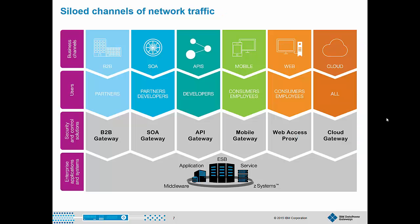The problem that companies of all sizes are facing is that as we update our enterprise architecture to accommodate these new systems of engagement, we have to adapt our network infrastructure to support the new channels. For example, you may already have a SOA gateway that protects web services, but to support APIs you'll need a specialized API gateway. And maybe you need to support mobile devices, so add a specialized mobile gateway. For B2B traffic, you need a specialized gateway that manages partner connections and supports B2B protocols such as AS2. Although all these specialized gateways solve some problems, they also create new ones. You probably need to open a hole in the firewall for each one, each requires specialized skills to configure and manage, and each probably uses its own policy language. Heterogeneous security policy combined with a Swiss cheese firewall is a recipe for security vulnerabilities, slow time to market, lack of agility, and it's expensive too.